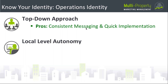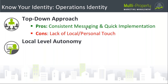The first operations identity is a top-down approach where marketing decisions are made and operated at the corporate level or through a regional handling multiple properties. The pros are very consistent messaging and quick implementation — if you have a corporate director of sales handling all your social media and marketing, you usually get a congruent message throughout your entire portfolio and can onboard new hotels much quicker. The weakness is a lack of local or personal touch.